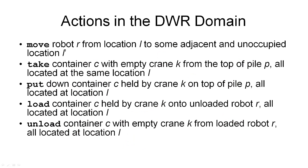You can probably guess what the different action types in this domain are. But here they are just to make sure that we are all on the same page. The first action is the move action. The move action moves a robot, that's the first argument to this action, from one location, the second argument, to some adjacent and unoccupied other location, L prime. As a result of this action, the robot will be now in a different location. That other location must be unoccupied and it must be adjacent, which means there must be a path that connects the two locations. That was the only action that is to be done by the robot.